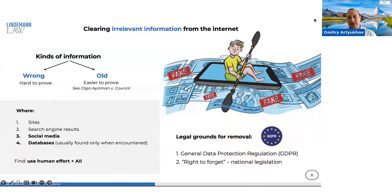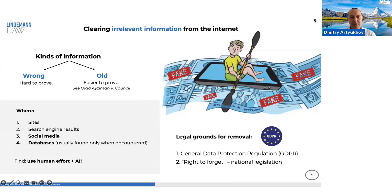One of the grounds why a person or even a company can be delisted from the SDN is that the grounds for its inclusion are already outdated and do not match actual reality. There are a number of cases regarding this — in particular, Olga Isiman versus Council — where this lady managed to prove before the European Court of Justice that she was no longer in a relationship with her ex-husband Mikhail Friedman since 2005, and that the grounds for her inclusion in the SDN list were based on tabloid publications which often had no authors, bore no debate, and were generally dubious.